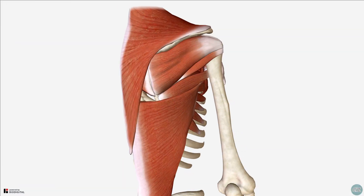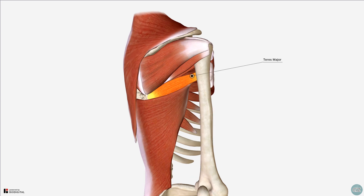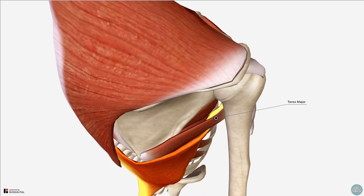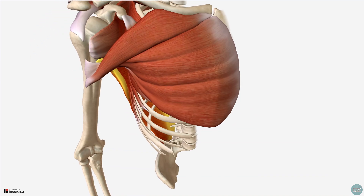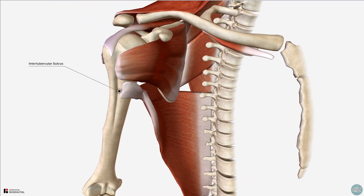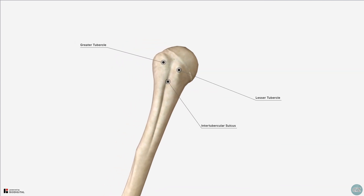The muscle fibres of the latissimus dorsi converge superolaterally towards the axilla, winding around the anterior aspect of the teres major muscle, before inserting via a flat tendon onto the anterior aspect of the proximal humerus on the floor of the intertubercular sulcus. This sulcus is so named as it lies between the greater and lesser tubercles of the humerus.